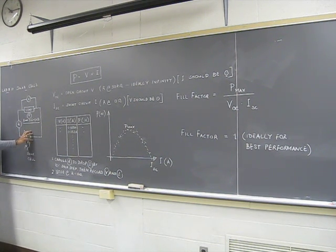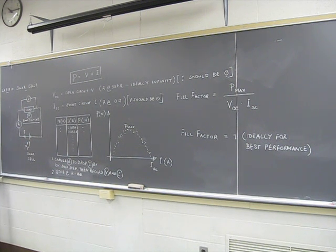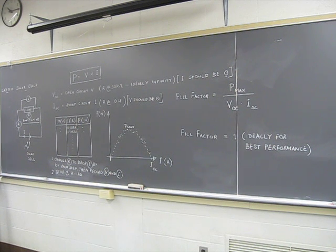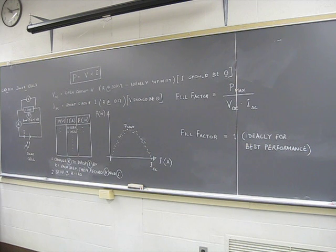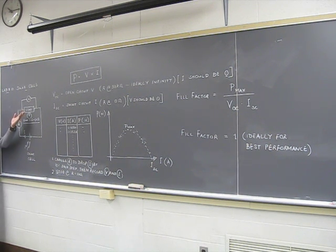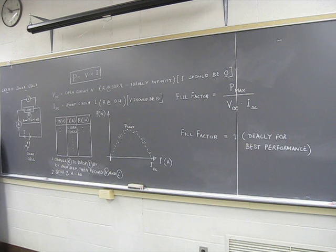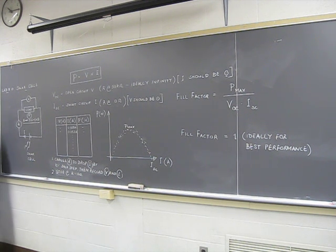When we put the solar cell with a load — a load can be a light in your calculator, that would be your solar-powered calculator — to make things easier for us we will have a resistor attached.